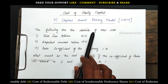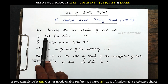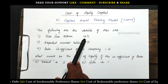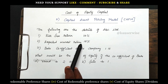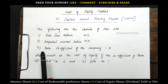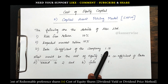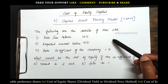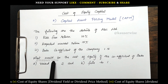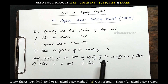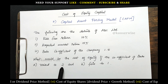The following are the details of ABC Limited. First, risk-free return 10%. Second, expected market return 15%. Third, beta coefficient of the company 1.5. These are the three pieces of information given. What would be the cost of equity if the coefficient of beta is raised to 2?